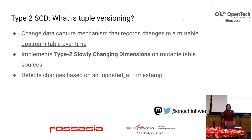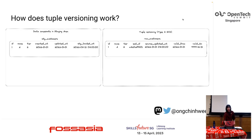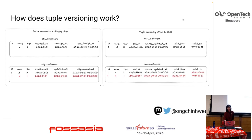Tuple versioning is a change data capture mechanism that records changes to a mutable upstream table over time and implements type 2 SCDs on mutable table sources. It detects changes using an updated-at timestamp. You need to define where to save your tuple versioning, what the unique identifier is, and whether to invalidate records no longer in the source. In the illustration, when a customer tier updates from tier two to tier one, instead of overwriting, you capture the change and update the validity period of the previous record.